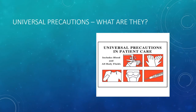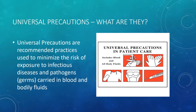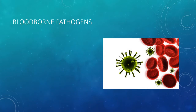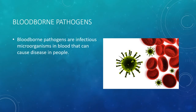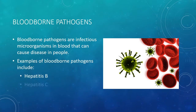Universal precautions are recommended practices used to minimize the risk of exposure to infectious diseases and pathogens carried in blood and bodily fluids. Bloodborne pathogens are infectious microorganisms in blood that can cause disease in people. Examples of bloodborne pathogens include Hepatitis B, Hepatitis C, and HIV.